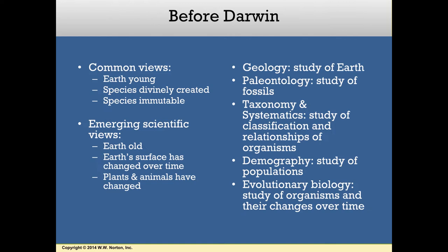Great ideas in science rarely emerge without considerable contributions from previous generations of great thinkers, and natural selection is no exception. To understand how natural selection was conceived, it helps to go back in time and consider what people thought about the natural world before Charles Darwin came along. The Judeo-Christian view held that Earth was quite young — approximately 6,000 years old. During the 17th century, Bishop Usher postulated that the Earth was created on Sunday, October 23rd, 4004 BC. In their view, God had created all species, and these species were unchangeable or immutable. However, scientists in the 18th and 19th centuries began to question this, collecting evidence that Earth was in fact millions of years old, and that both Earth's surface and its plants and animals had changed considerably over time.